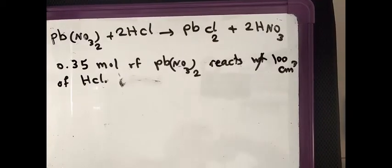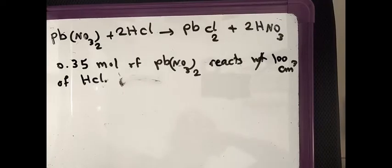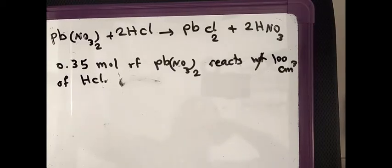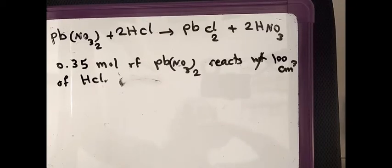In this question, we have the equation Pb(NO₃)₂ + 2HCl → PbCl₂ + 2HNO₃. It is asking us: if we have 0.35 moles of Pb(NO₃)₂ reacting with 100 cm³ of HCl, find the concentration of HCl in mol/dm³.